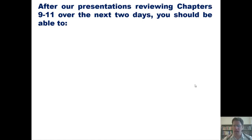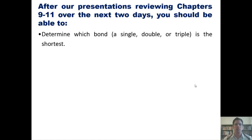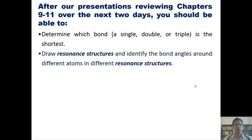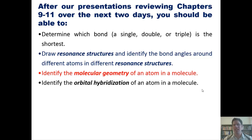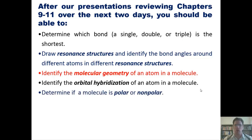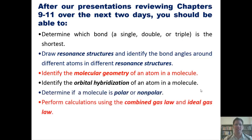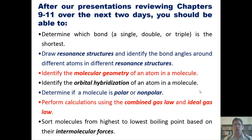After this series of lectures reviewing chapters 9 through 11, you should be able to: first, determine which bond — single, double, or triple — is the shortest; second, draw resonance structures and identify bond angles; third, identify molecular geometry; fourth, identify orbital hybridization; fifth, determine if a molecule is polar or nonpolar; sixth, perform calculations using the combined gas law and ideal gas law; and seventh, sort molecules from highest to lowest boiling point based on intermolecular forces.